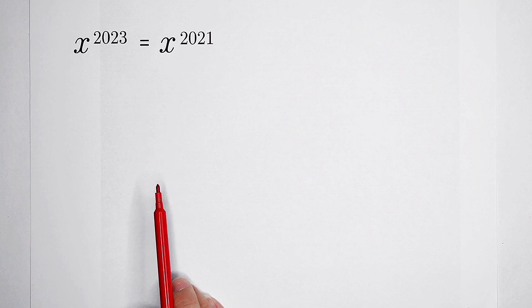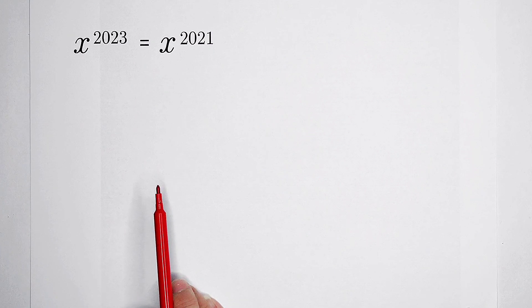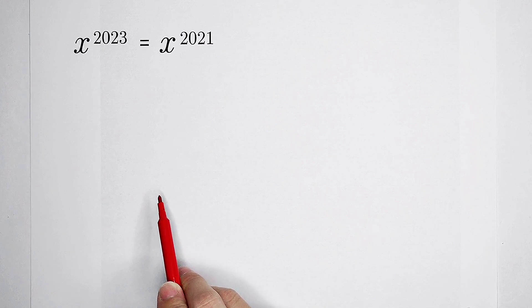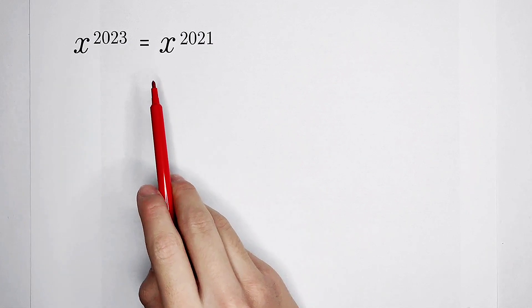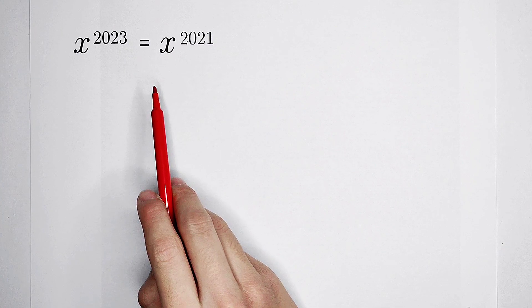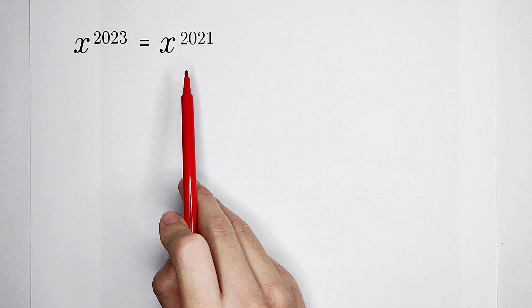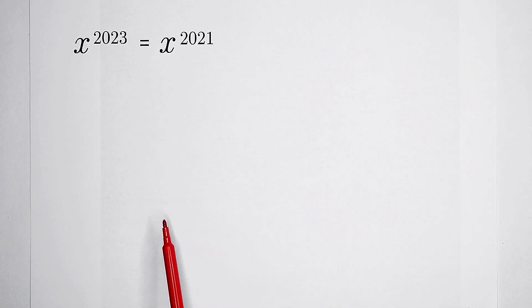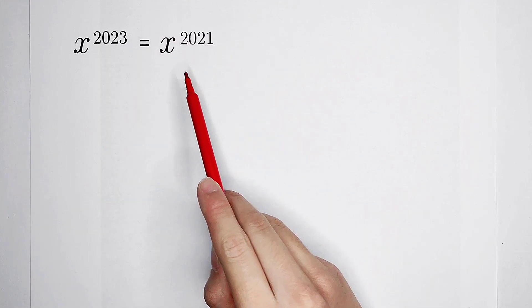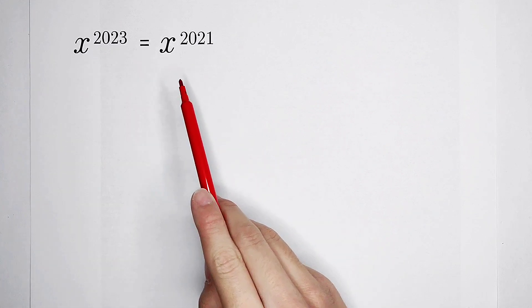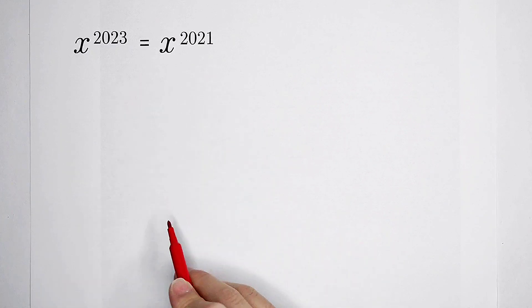How nice it is, how to start solving it. Most of you have noticed that the bases are equal, x, and exponents 2023 and 2021. So I believe that most of you will divide the right-hand side on the both-hand side. So let's do it.